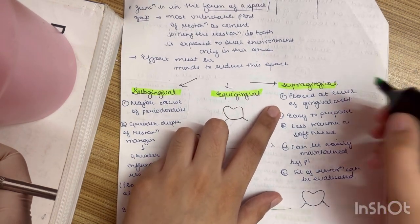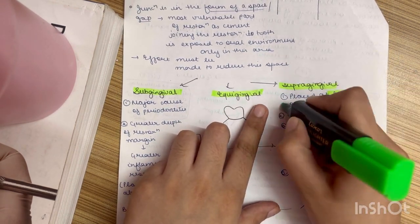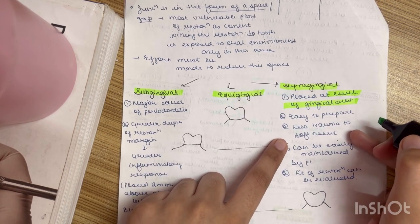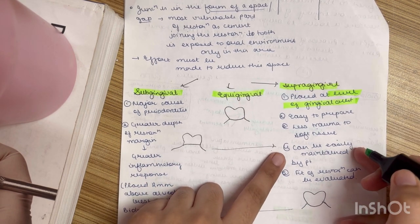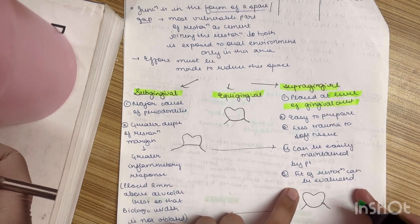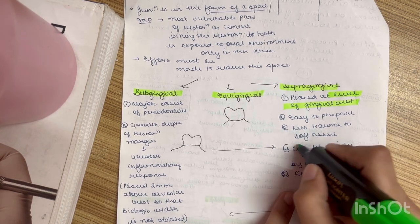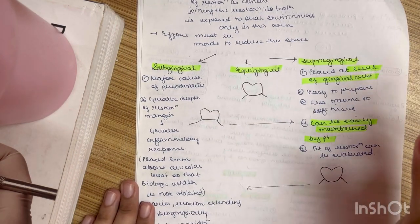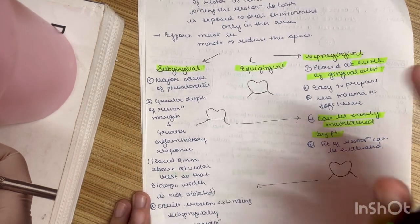First we will do the supragingival. What is supragingival? It is placed at the level of the gingival crest. It is easy to prepare. Obviously there will be less trauma to the soft tissue. It can be easily maintained by the patient and fit of the restoration can be evaluated. The points that are important are these ones.